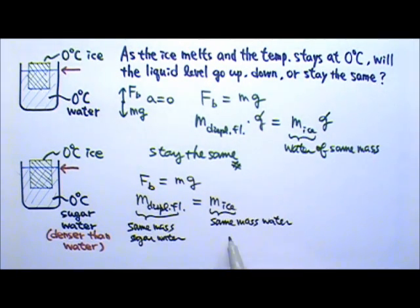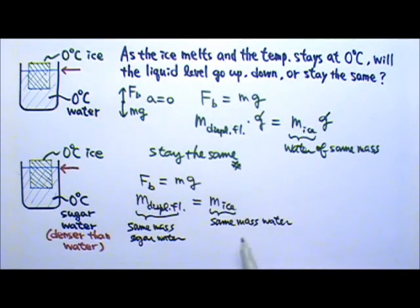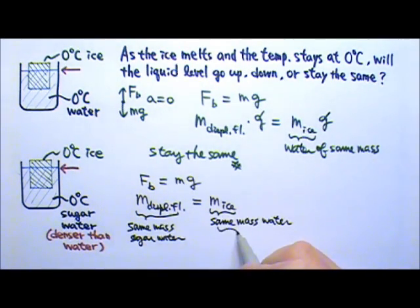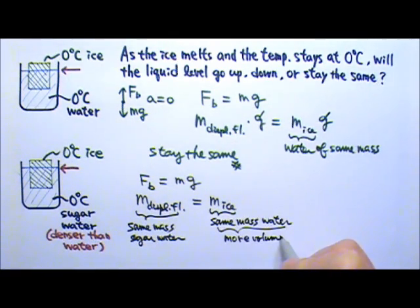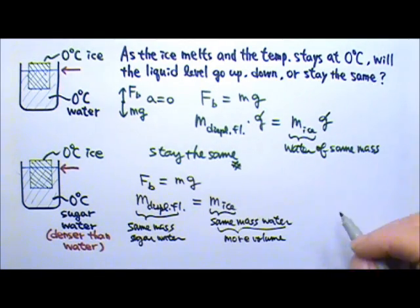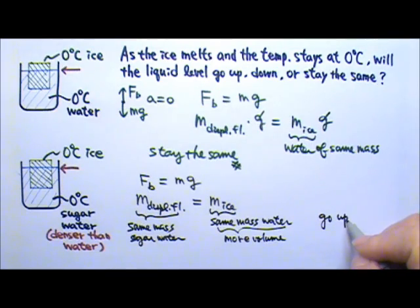This ice melts into the same mass water, but the water is not as dense as the sugar water. So this same mass water is going to occupy more volume than the same mass sugar water. Therefore, the water level will go up.